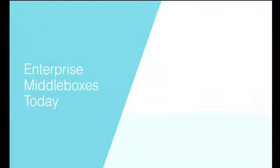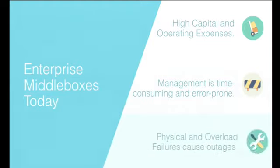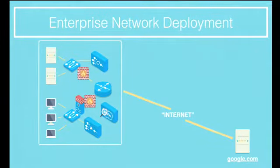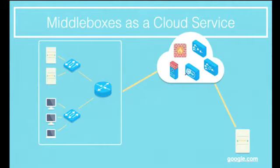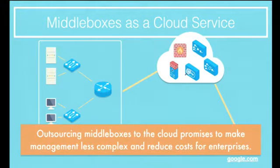Let's recap. Middleboxes are widely deployed and in huge numbers — they make our networks look very different from before. Middleboxes introduce high capital and operating expenses, management is time-consuming and error-prone, and physical and overload failures cause outages. My research proposes an alternative architecture for how we should deploy and operate middleboxes: the key idea is to take this messy enterprise network and outsource middleboxes to the cloud. Few companies manage their own mail or storage servers anymore, and I think middleboxes should be no different. Cloud solutions have made mail and storage systems cheaper and easier to manage, and cloud solutions can deliver that same promise for networking infrastructure.